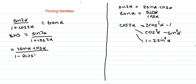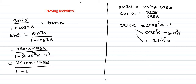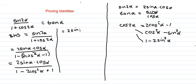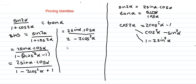So we have two sine alpha cos alpha, all over one minus two cos squared alpha plus one. This simplifies to two sine alpha cos alpha, all over two minus two cos squared alpha, which gives us two sine alpha cos alpha, all over two cos squared alpha — and then the twos cancel, leaving sine alpha over cos alpha.